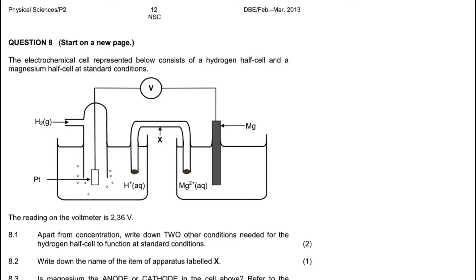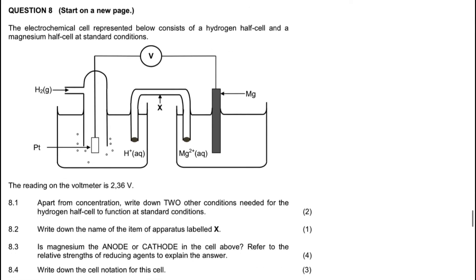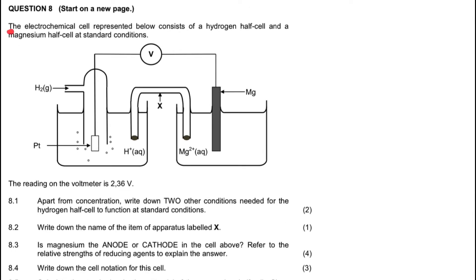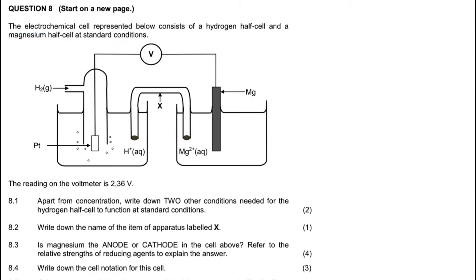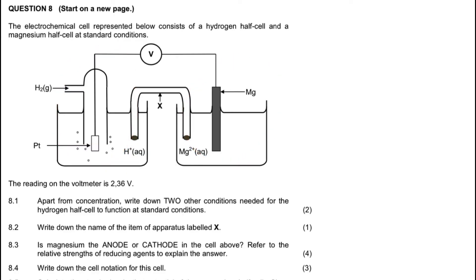Welcome to my YouTube channel. If you're new here, don't forget to subscribe and like all my videos. This is an electrochemistry question paper from March 2020. The electrochemical cell operates as follows: it consists of a hydrogen half cell and a magnesium half cell at standard conditions. Here you can see the hydrogen half cell and the magnesium half cell.